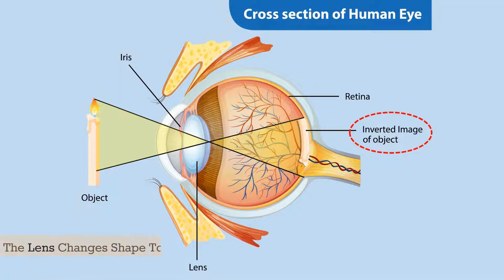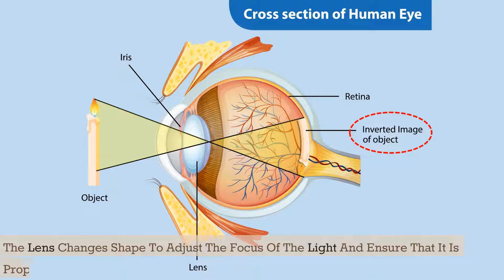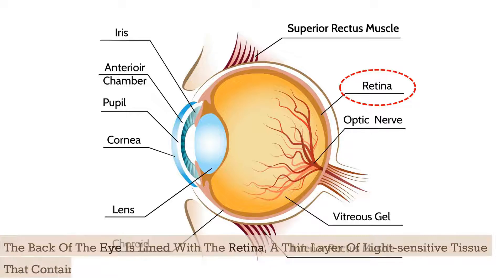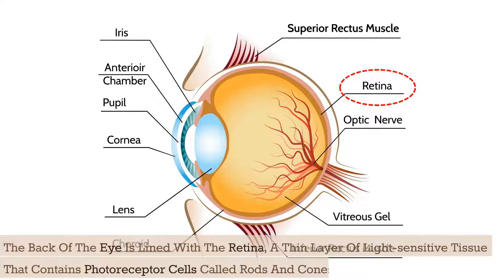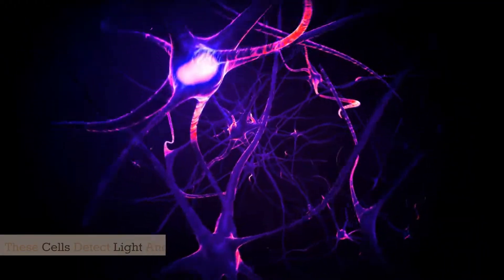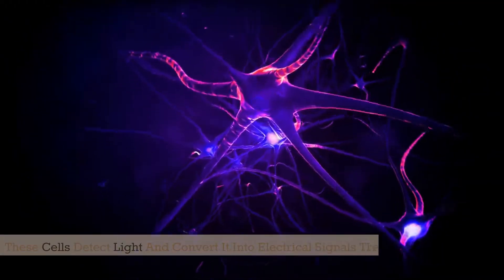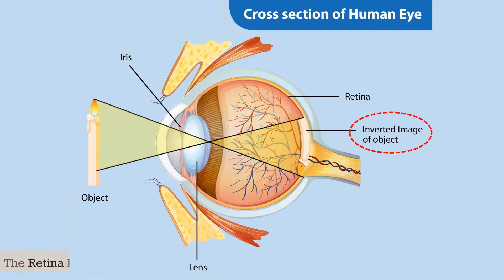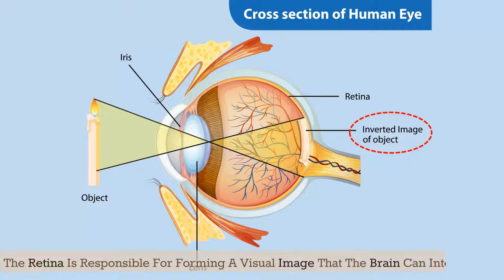The lens changes shape to adjust the focus of the light and ensure that it is properly directed towards the back of the eye. The back of the eye is lined with the retina, a thin layer of light-sensitive tissue that contains photoreceptor cells called rods and cones. These cells detect light and convert it into electrical signals that are sent to the brain via the optic nerve. The retina is responsible for forming a visual image that the brain can interpret.